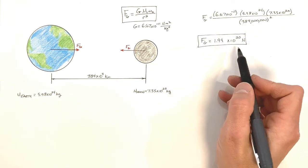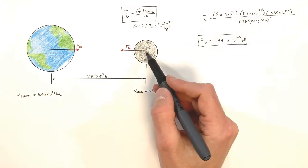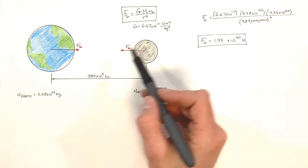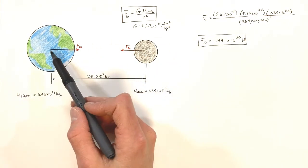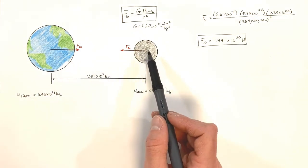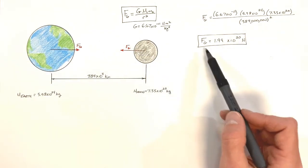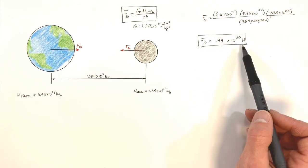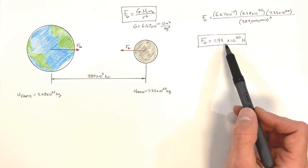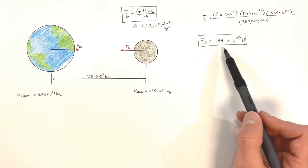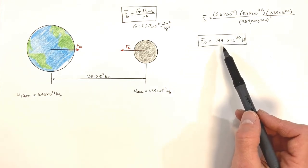That's an enormous force — it is enough to keep the moon in orbit around the earth. When talking about celestial objects like the forces between the earth and the sun or the moon and the earth, this isn't a crazy number. But yes, this is not something we typically encounter as forces in our everyday lives — this would literally be crushing.